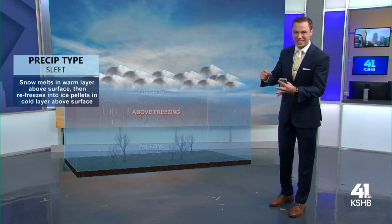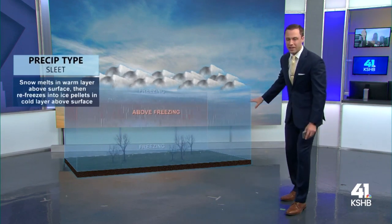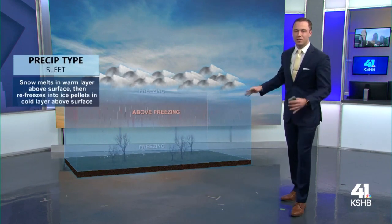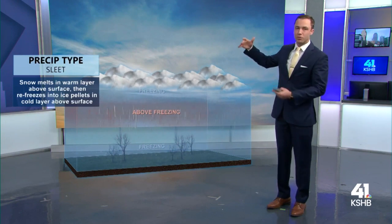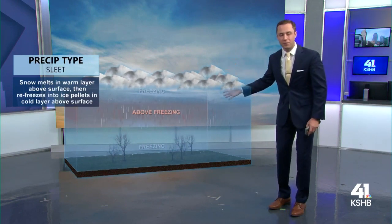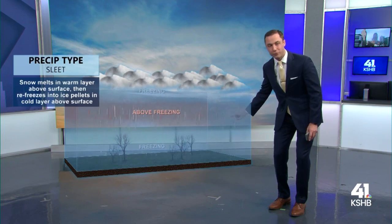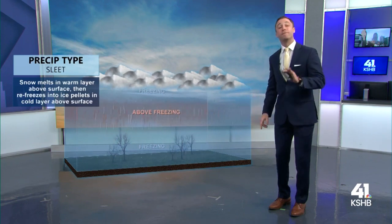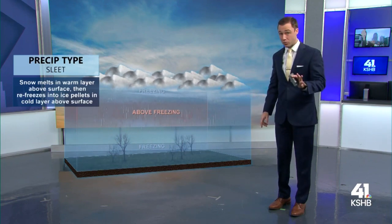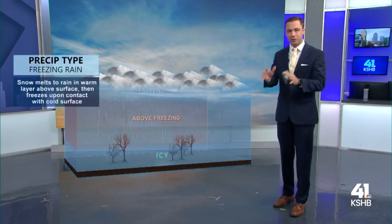When we start to get a little bit of warm air coming in into the middle part of the atmosphere, that's when sleet develops. It goes from snow in the clouds and then melts in this layer of warm air, but then refreezes before hitting the ground as an ice pellet.